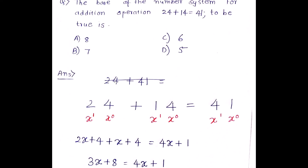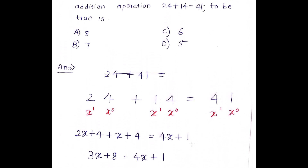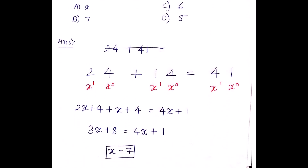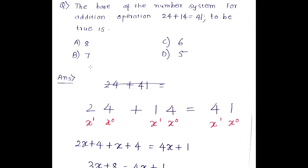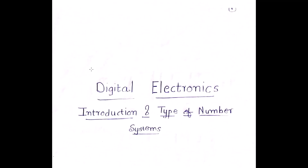To solve such questions: write the expression, start from the LSB, assign x⁰ to it, then x¹, x², x³ as needed. Since we have only two-digit numbers, we use x⁰ and x¹. Write down the entire expression and find the value of x. Here x = 7 means there are seven independent digits, from 0 to 6, hence the answer is base 7.